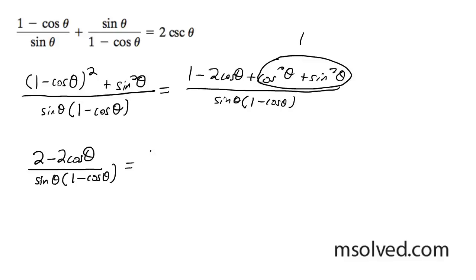So what I'm going to do on the top, I'm going to pull out a 2. So I get 1 minus cosine theta over sine theta 1 minus cosine theta. So these cancel each other out.